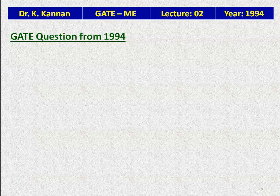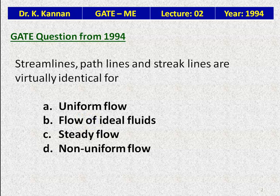In this lecture, we solve questions from the 1994 GATE question paper. The first question: streamlines, path lines, and streak lines are virtually identical for — uniform flow, flow of ideal fluid, steady flow, or non-uniform flow.